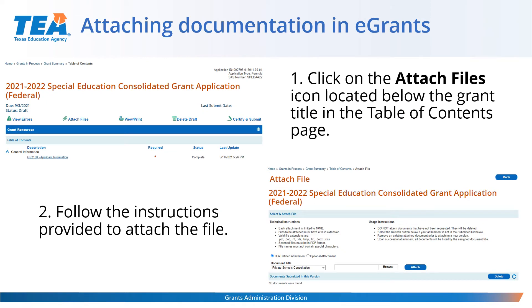To attach documentation in eGrants: Step 1, click on Attach Files next to the green paperclip icon, located below the grant title on the Table of Contents page. This will open the Attach File page. Follow the instructions provided to attach the file, and make sure the file is saved to your computer before attempting to upload the document.